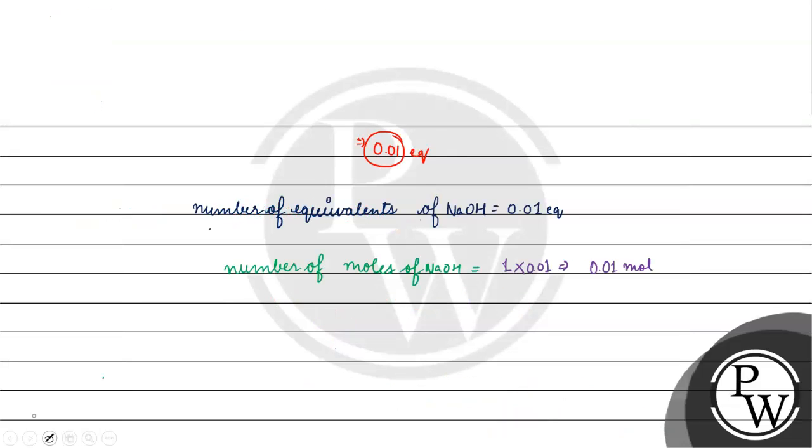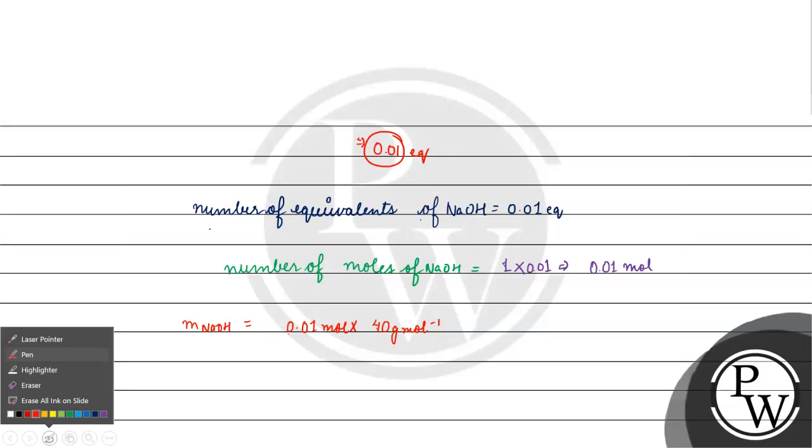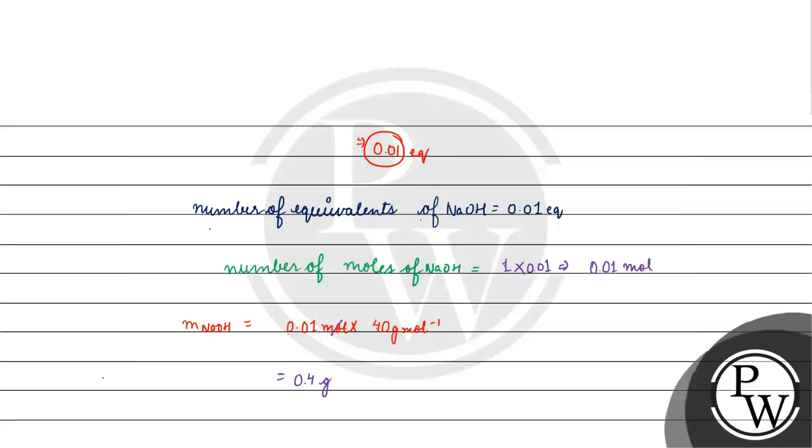What will the mass of NaOH be? That will be number of moles into molar mass of NaOH which is 40 gram per mole. The mass of NaOH will come to 0.4 gram.